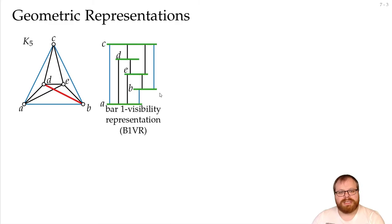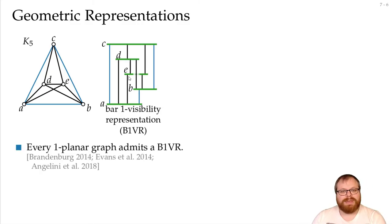But if we allow crossings here, so we remove one small part of the E, and we lay a visibility through it, then we get our bar 1 visibility representation. And here the 1 means that every visibility can jump over one other bar. Then k visibility means that we can jump over k bars. And in fact, every 1-planar graph admits a bar 1 visibility representation.